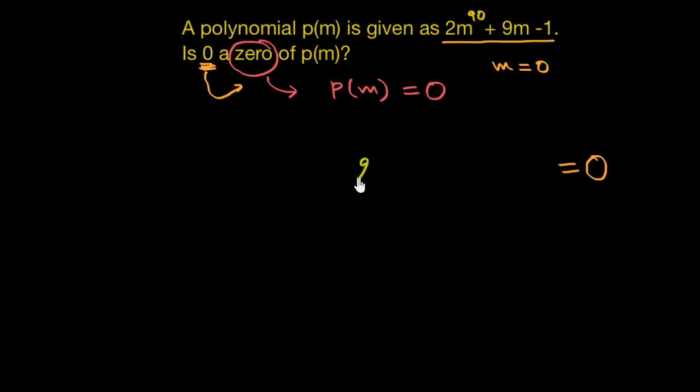So 2 times, instead of m, let's substitute 0. 2 times 0 to the power 90 plus 9 times m.